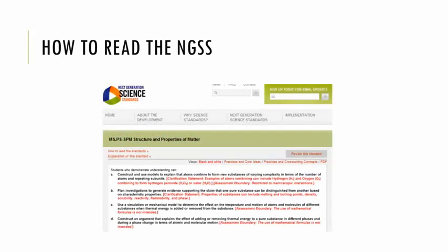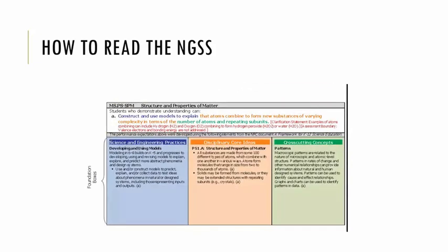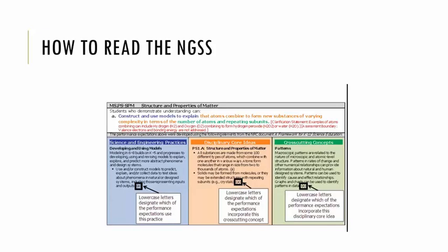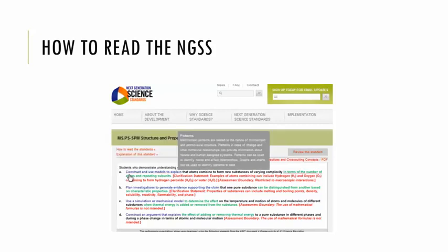These clarifying statements are designed to supply examples or additional clarification to the performance expectation. On the web, you will be able to choose the coloring option for the performance expectation that is most useful to you: black and white, coloring just the practices and disciplinary core ideas, or coloring just the practices and cross-cutting concepts. Below the performance expectations are three color boxes that contain the foundational language for the standard. These foundation boxes are based on the National Research Council's document, a framework for K-12 science education. The language in these boxes was used to compose the performance expectations, and mousing over words will produce a pop-up box with corresponding foundation box language.